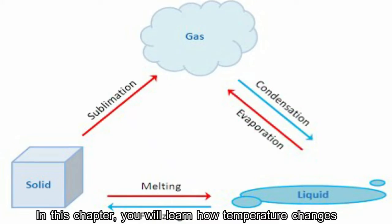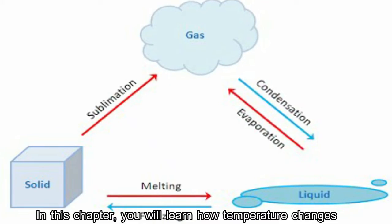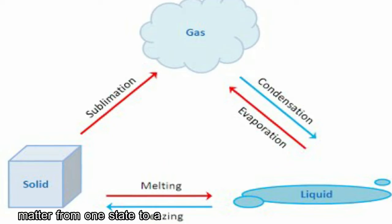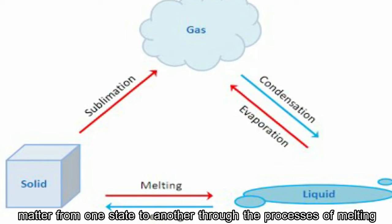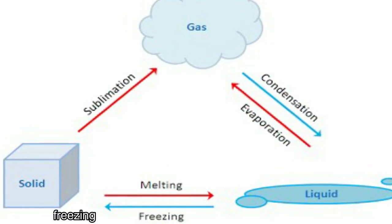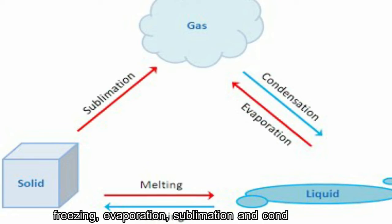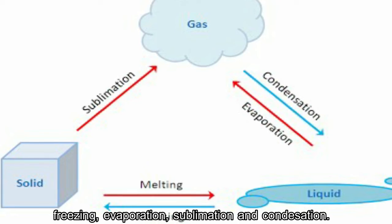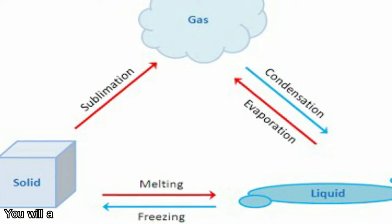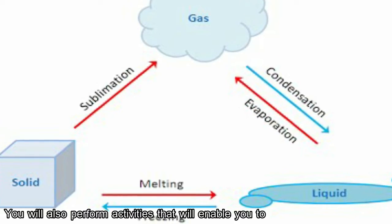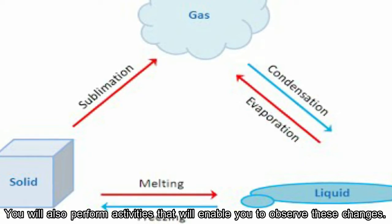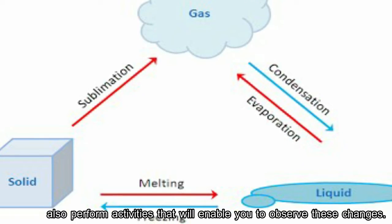In this chapter, you will learn how temperature changes matter from one state to another through the processes of melting, freezing, evaporation, sublimation, and condensation. You will also perform activities that will enable you to observe these changes.